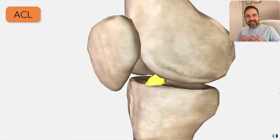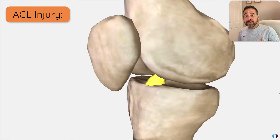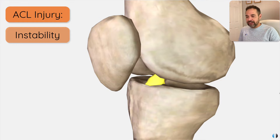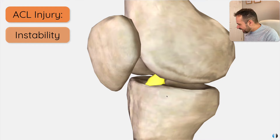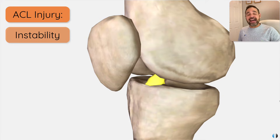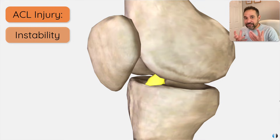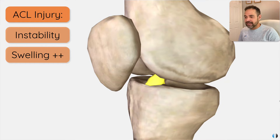The ACL's main role is in preventing excessive anterior or forwards movement of the tibia on the femur. Therefore, when a patient has an ACL injury, one of the key symptoms they're going to feel is instability or giving way, because the ACL is unable to do that job. We also know that the ACL has a really good blood supply, and therefore you'll commonly find that when patients truly rupture their ACL, they will get a significant amount of swelling in the first 5 to 10 minutes following their injury.